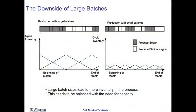Now let's formulate the example of the restaurant making cheeseburgers and hamburgers. Look at what's happening in the kitchen — during this time here we're making cheeseburgers, followed by a long batch of veggie sandwiches. Now, what's happening to inventory as we produce? While we're producing cheeseburgers, we're serving the cheeseburger demand, but we also have to prepare for those days where we're making veggie sandwiches, and thus we have to accumulate cheeseburger inventory.